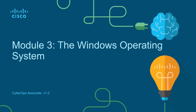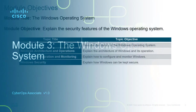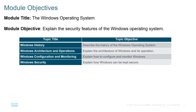Module 3: Windows Operating System. We are going to be looking at Windows OS in more depth. We'll look at the history, the architecture, the operations, how to configure and monitor certain components, and we'll wrap it up with some basic Windows security.